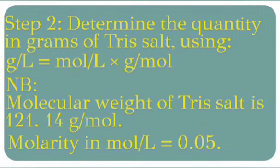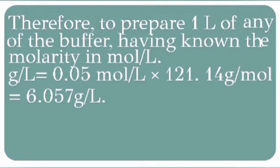Step 2: Determine the quantity in grams of Tris salt using the formula: grams per litre equals mol per litre times grams per mol. The molecular weight of Tris salt equals 121.14 grams per mol. Therefore, to prepare 1 litre of either buffer: grams per litre equals 0.05 mol per litre times 121.14 g/mol, which gives us 6.057 grams per litre.